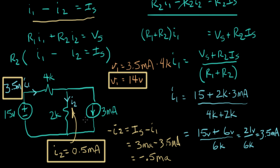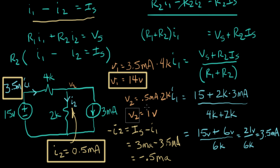Our last voltage is V2, the voltage across the 2K resistor. V2 equals I2 times R2, which is 0.5 milliamps times 2,000 ohms (2K), giving V2 equals 1 volt. And now we've solved our circuit — that's a complete circuit analysis using the fundamental laws.